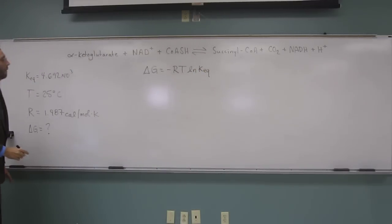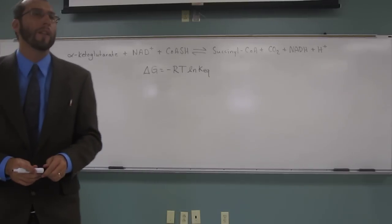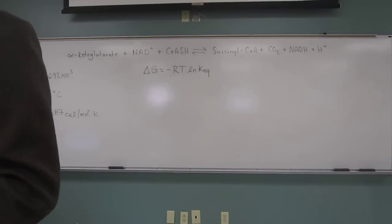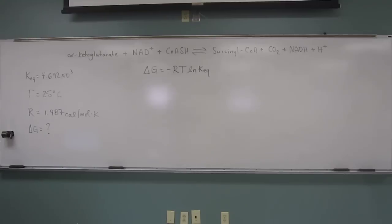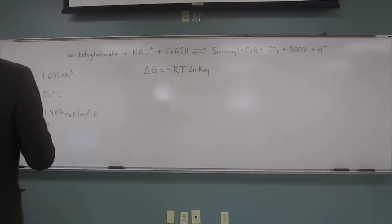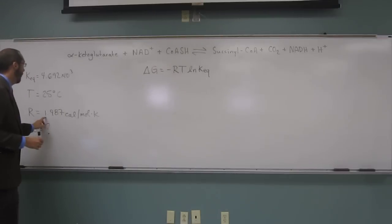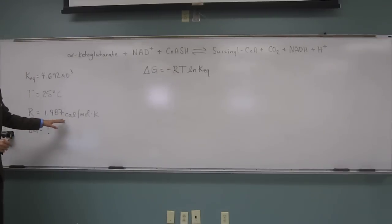So remember in this one, I didn't read it, but it said it wanted it in kilocalories, which is why I gave us the R for calories. Remember these R's will always be given to you, any constants will be given to you. It's not something you need to remember. The thing you want to remember, though, is if it asks for joules or kilojoules, you're going to use the 8.314 joules per mole Kelvin R.